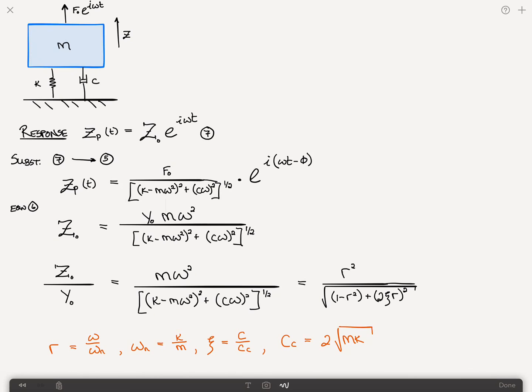I guess over here I should write, we haven't put in what phi is, this again came from the previous video, but that phi is equal to the arc tangent of the imaginary part divided by the real part. So that was c omega divided by k minus m omega squared and that could be rewritten in non-dimensional terms again as 2 zeta r divided by 1 minus r squared, where the zetas and r's I've given down here, what those are.